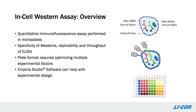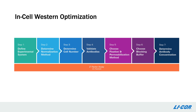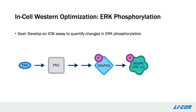This plate-based format requires optimizing a number of experimental factors beyond those that need to be optimized in a traditional western blot. LI-COR's Empiria Studio software can help with the design of these experiments. This chart highlights the different steps that should be optimized in the development of an in-cell western assay. This is often an iterative process where some conditions may need to be re-optimized once other conditions have been finalized. In the example I'd like to share, the goal was to assess changes in ERK phosphorylation upon treatment with the small molecule TPA.